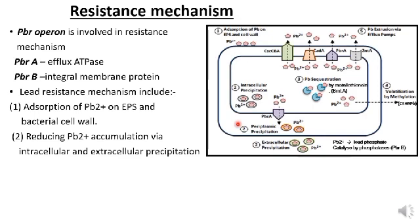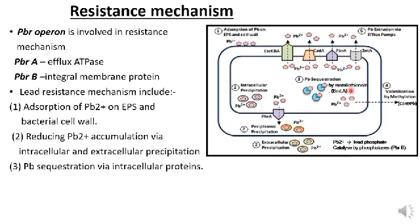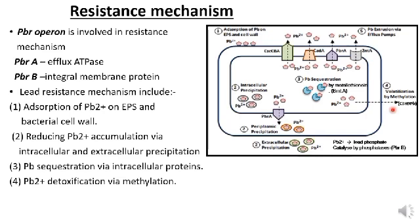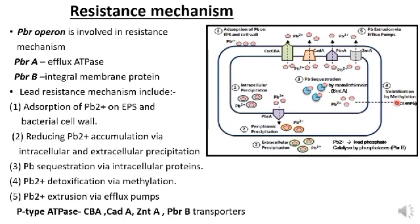The PBR gene encodes phosphatase which precipitates lead in the form of lead phosphate. The third one is lead sequestration via intracellular proteins. The BMTA gene encodes lead-binding MTS protein, which is metallothionines, involved in lead sequestration. The fourth is lead detoxification via methylation, where inorganic lead is converted into trimethyl lead and tetramethyl lead. The fifth one is lead extrusion via efflux pump.